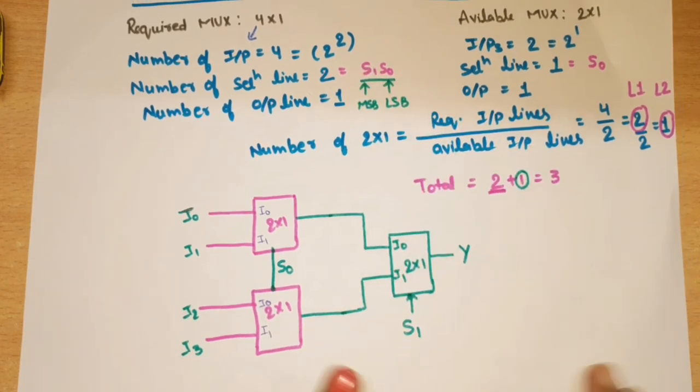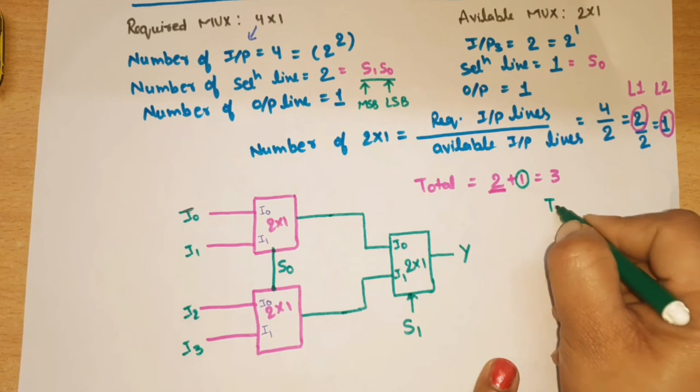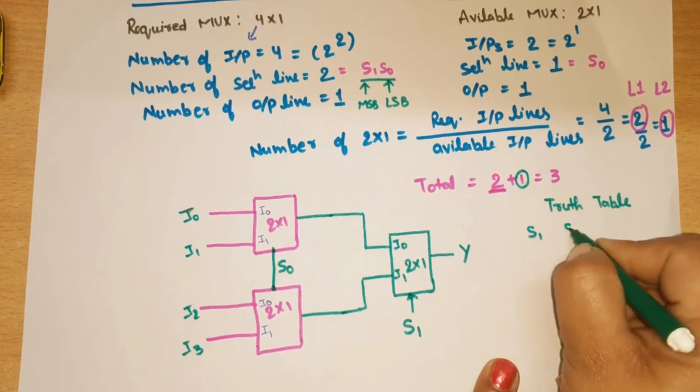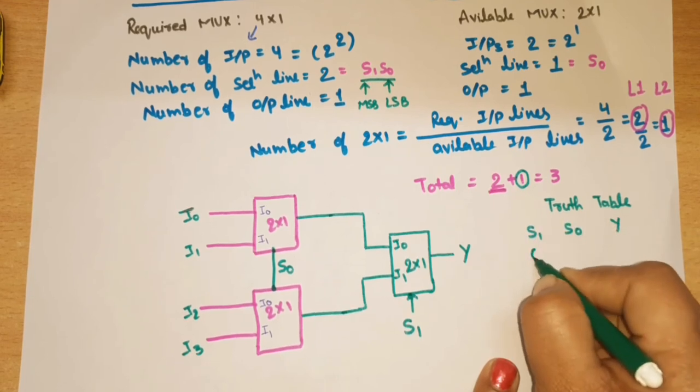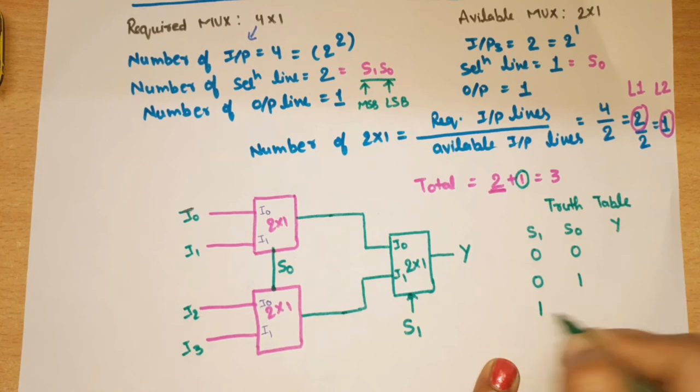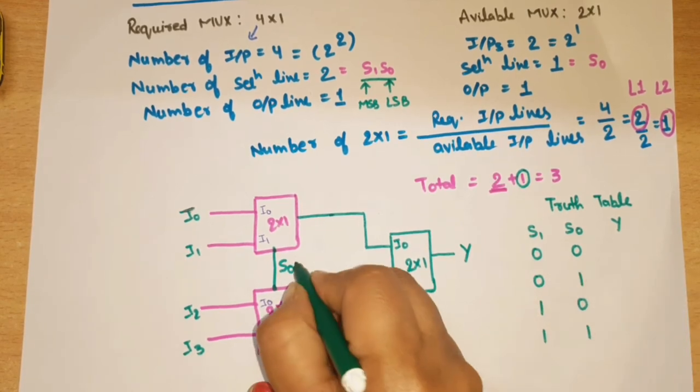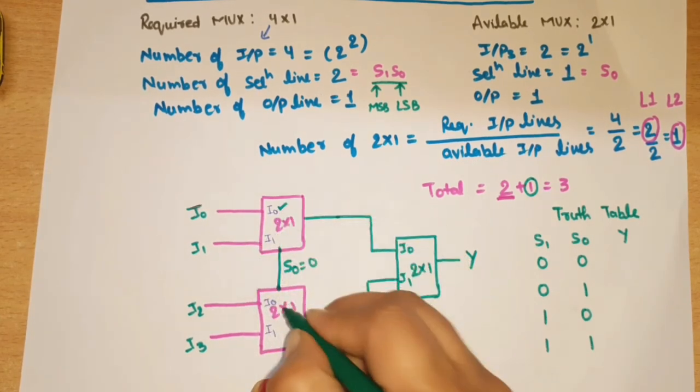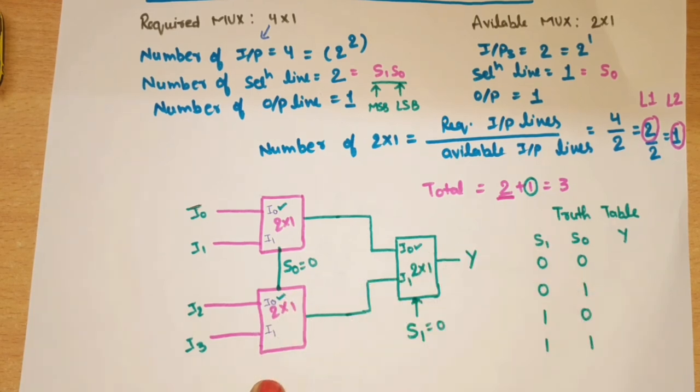Now if we draw this truth table, what will happen? Truth table: S1, S0, Y. 0, 0. 0, 1. 1, 0. 1, 1. If we have here 0, 0, in both cases I0 will be selected. In both cases, I0 will be selected.